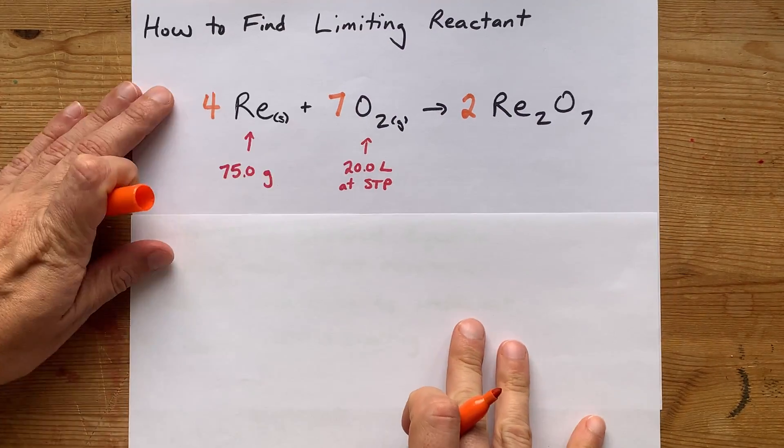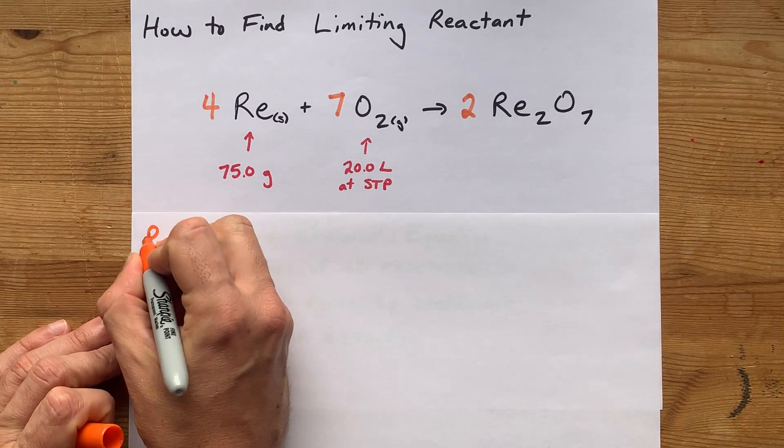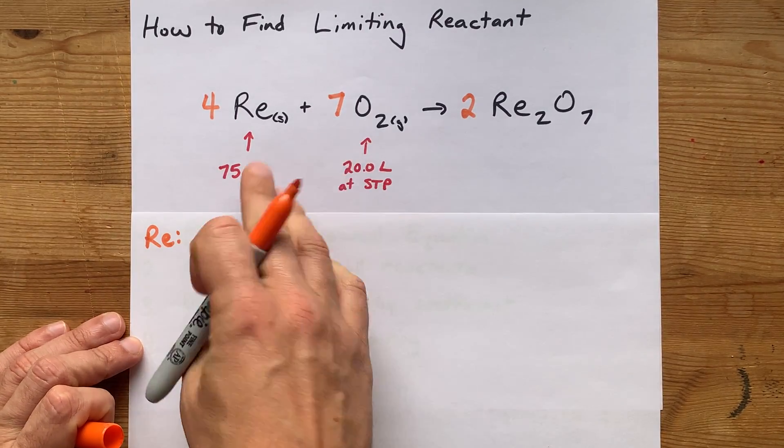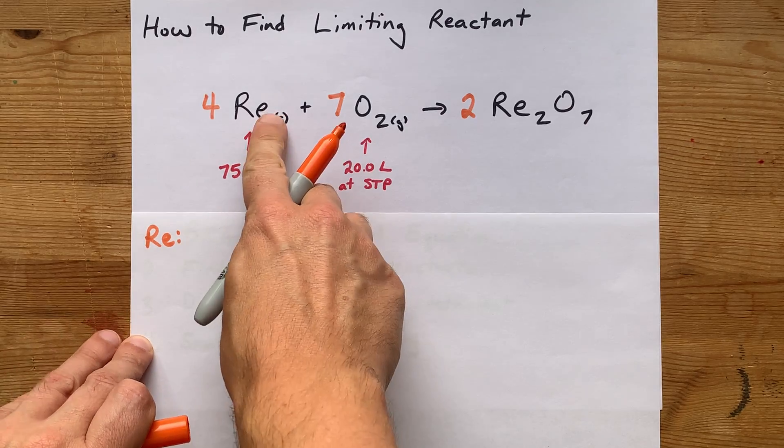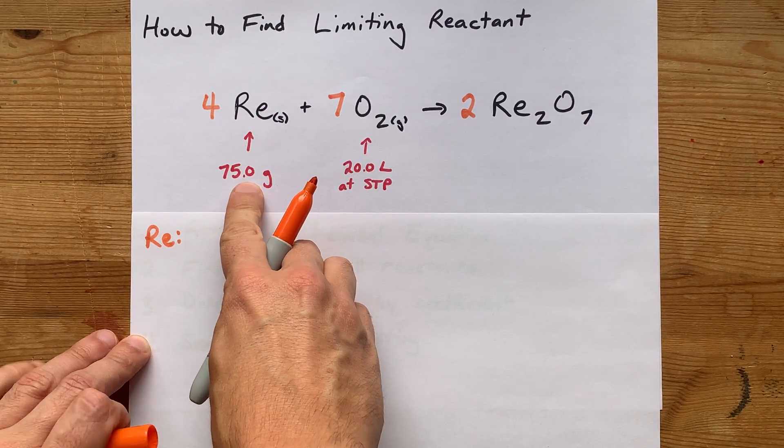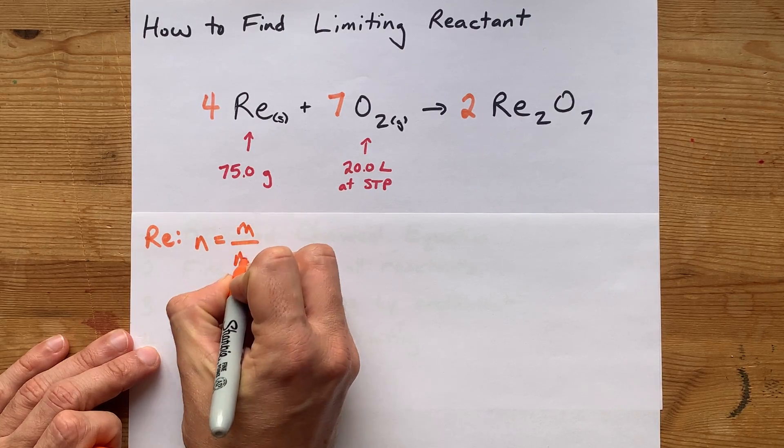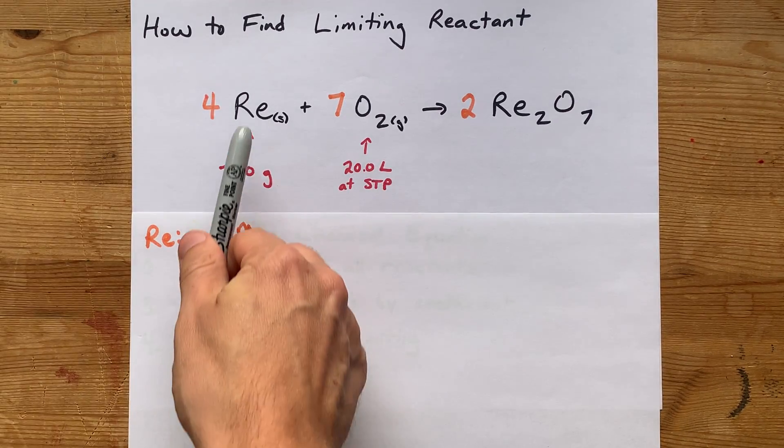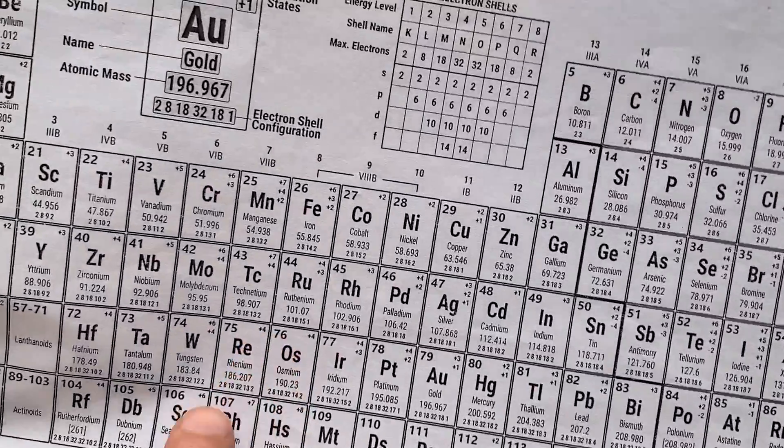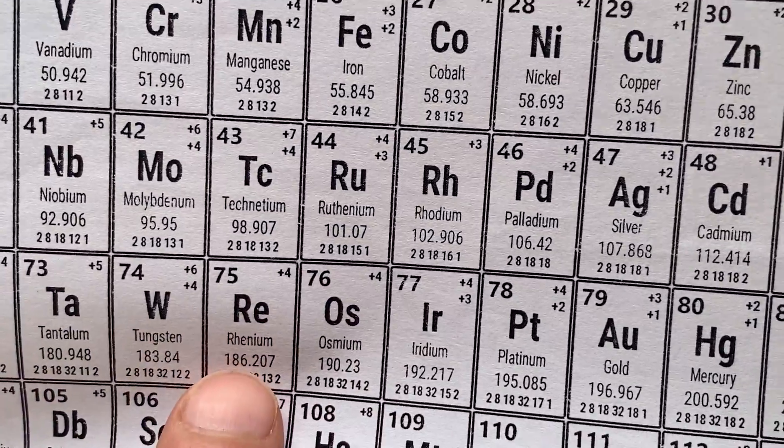Now we need the number of moles of each reactant. That's going to depend on how the information was given to you. For a solid, you can convert grams to moles by doing mass divided by molar mass. In this case, rhenium is just a pure element, so you can use the number from the periodic table.